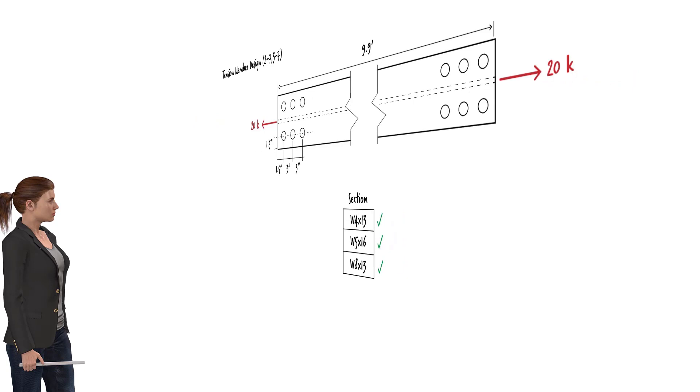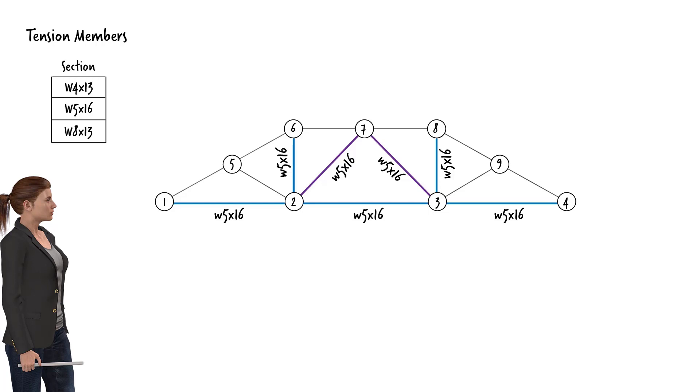In summary, we can use either one of these standard sections for all the tension members in the truss structure. We will begin discussing the design of compression members in the next lecture.